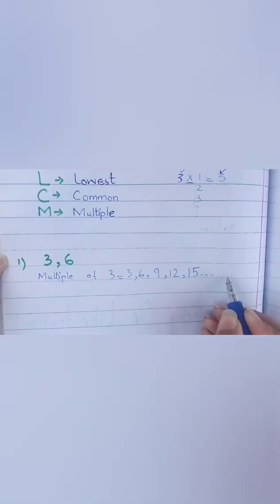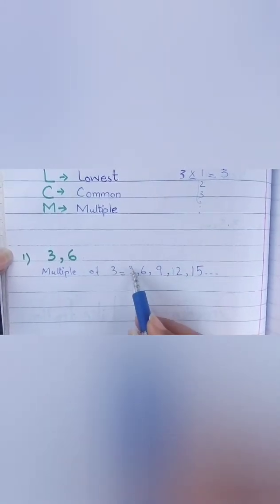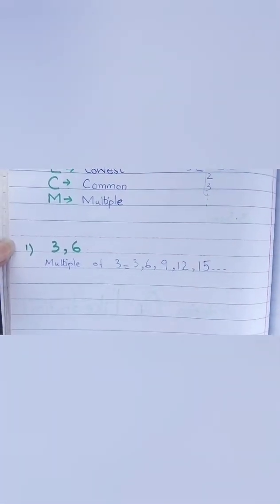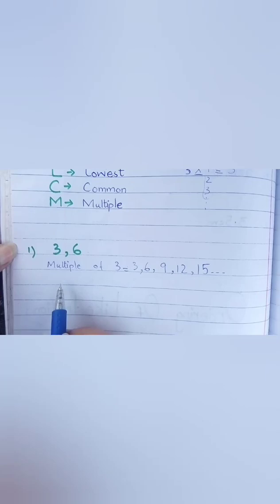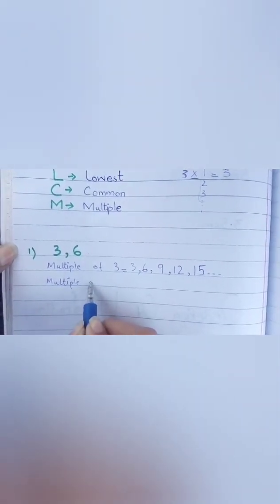Toh aap ne five times likh diya, toh ab aap log three dots laga denge, it means this is continue form. Humesha multiple is number se aap ke bade honge, jo number aap ko given hoga, us number se humesha multiples ke aayenge, usse bade aayenge. Ab next digit hai aap ke paas six, so aap log likhna hai.